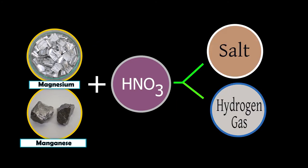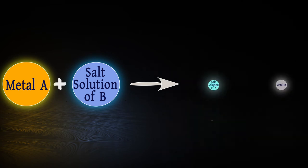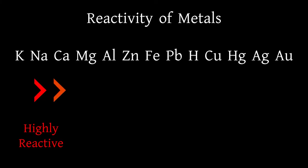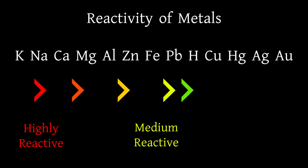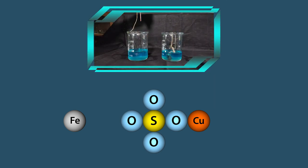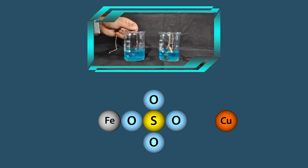Reactive metals can displace less reactive metals from their compounds in solution. If we look at the reactivity series of metals, we always find that the more reactive metal displaces the less reactive ones. You have probably come across similar reactions before. What happens when an iron nail is dipped in a solution of copper sulfate?